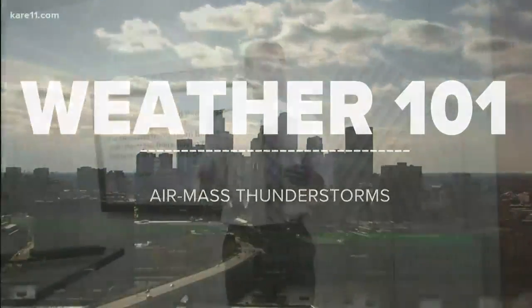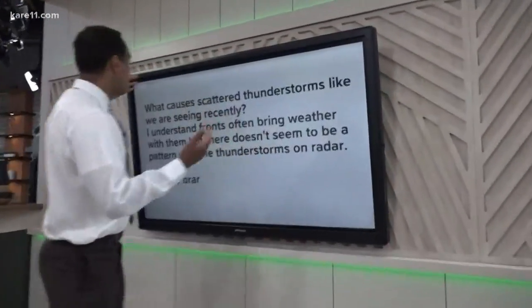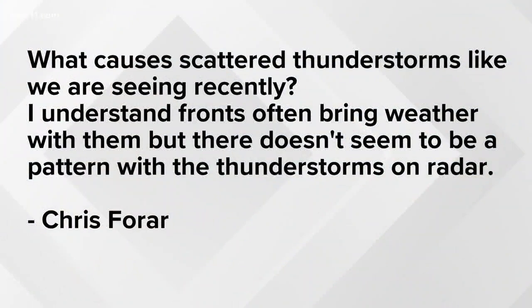In summertime we sometimes get pop-up thunderstorms, and recently we had a viewer ask: what causes scattered thunderstorms like we've been seeing recently? I understand fronts often bring weather with them, but there doesn't seem to be a pattern with the thunderstorms on radar.